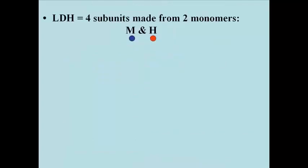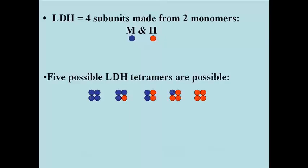LDH is actually a tetramer made of two different monomer polypeptides, called M and H. In theory, up to five different LDH tetramers could be assembled with these two monomers, as shown here. You could have 4Ms, or 3Ms and 1H, or 2Ms and 2Hs, or 1M and 3Hs, or just 4Hs.